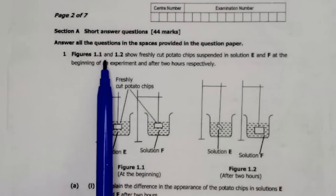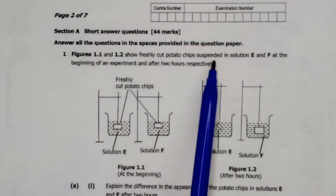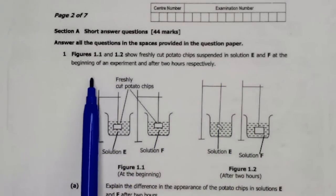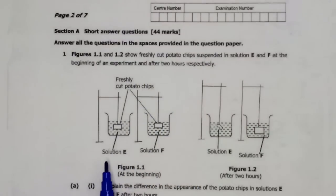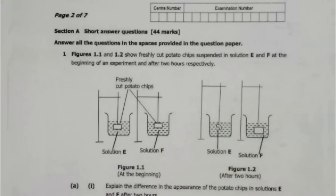Question 1: Figure 1.1 and 1.2 show freshly cut potato chips suspended in solution E and F at the beginning of an experiment and after two hours respectively. So we have solution E, solution F which is figure 1.1 at the beginning and figure 1.2 at the end of the experiment.